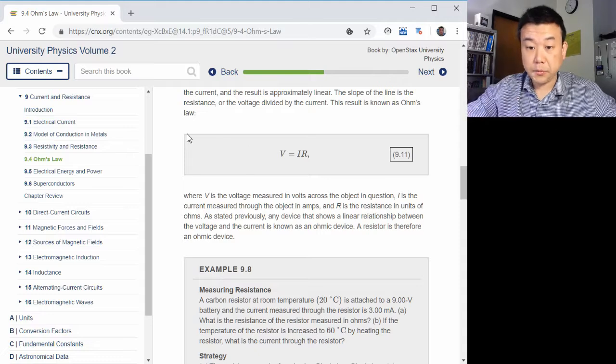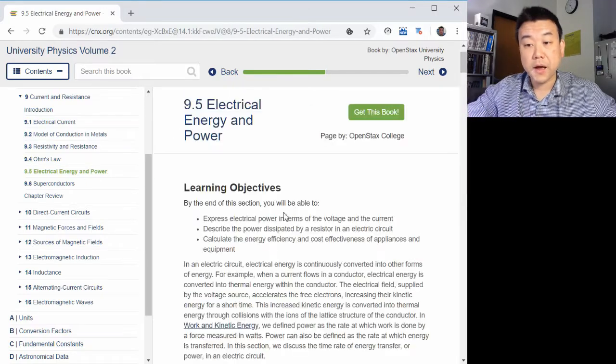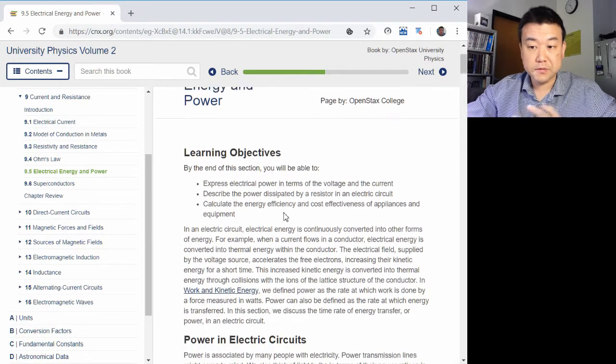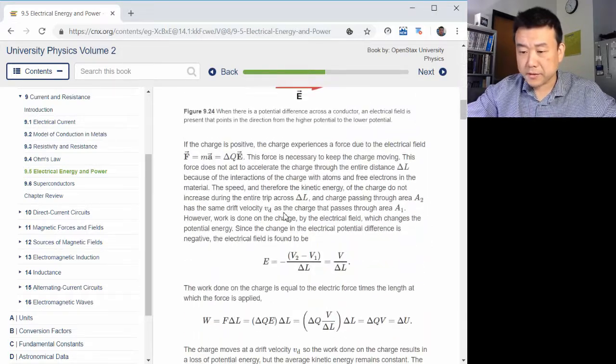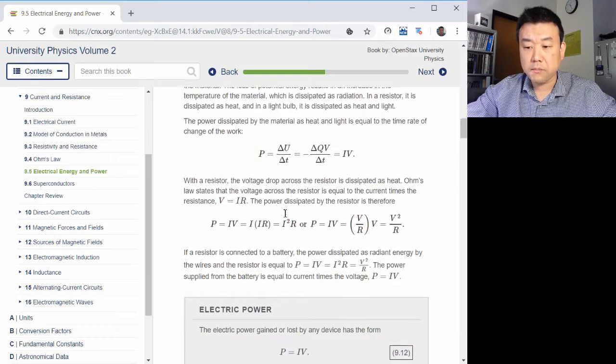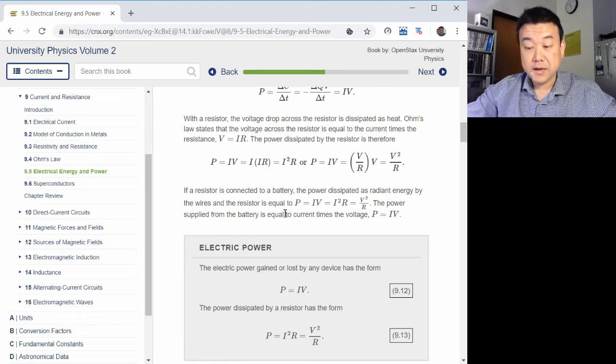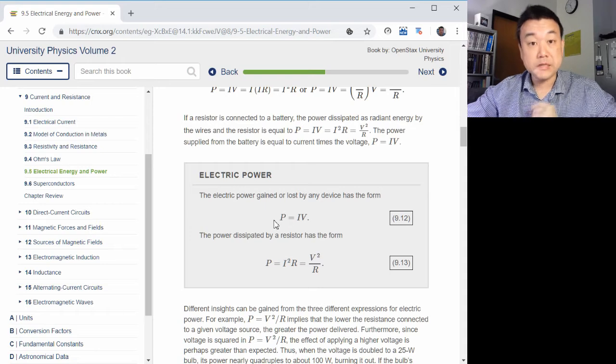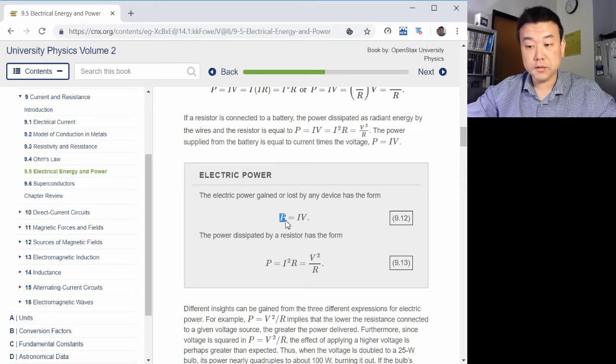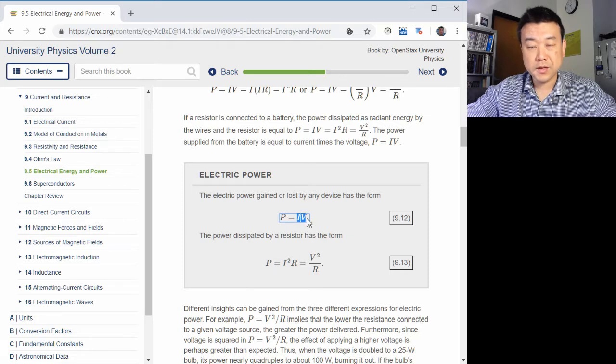Now, the second thing that is important is electrical energy and power. It's just useful for daily life. And it's important in that there are a number of expressions. And it's good for you to know which is more useful when. It's better to think of electric power in this way. Power is equal to current times voltage.